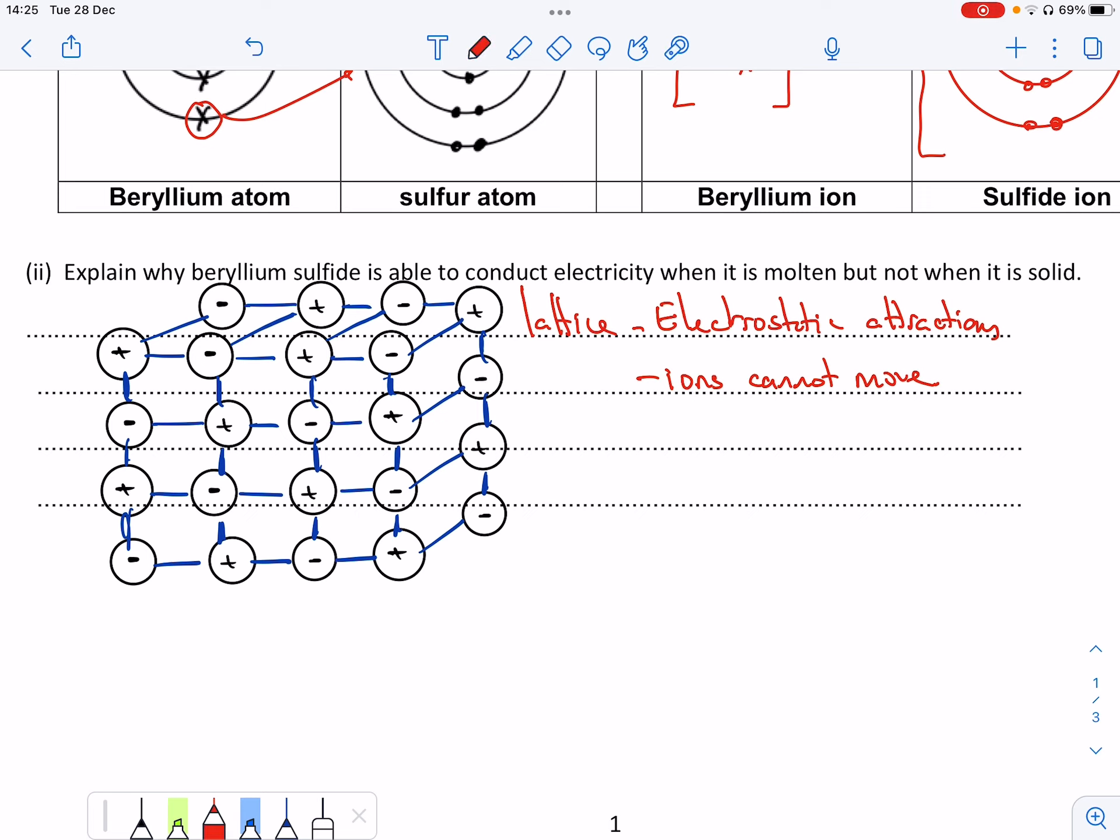What happens when I make it molten is I go across and I break all these attractions. So all these attractions become broken. We could do that quite quickly actually, so they all start to break and as soon as you start to break